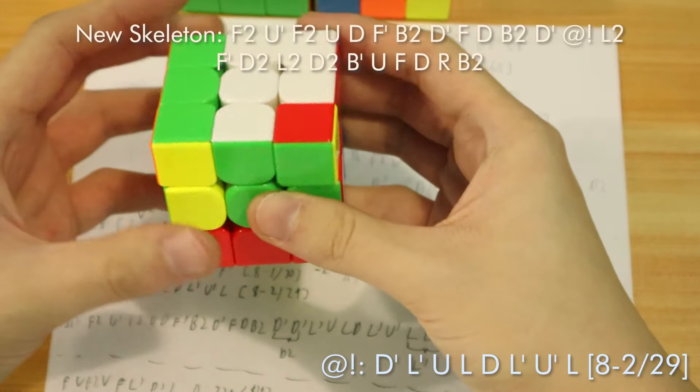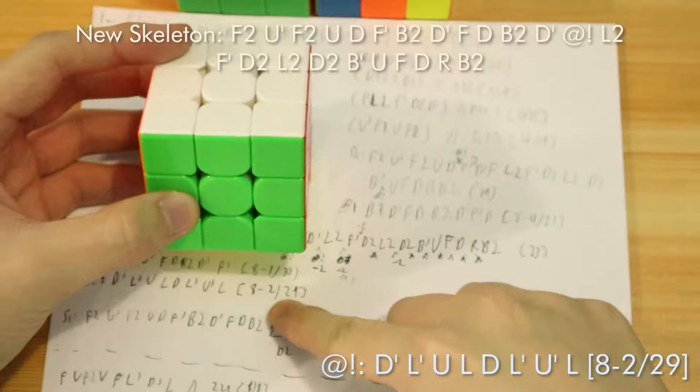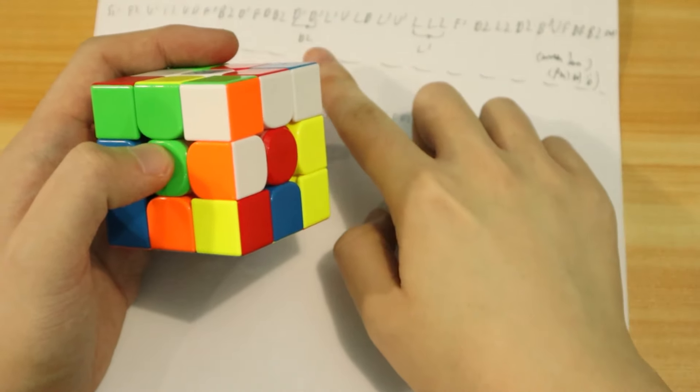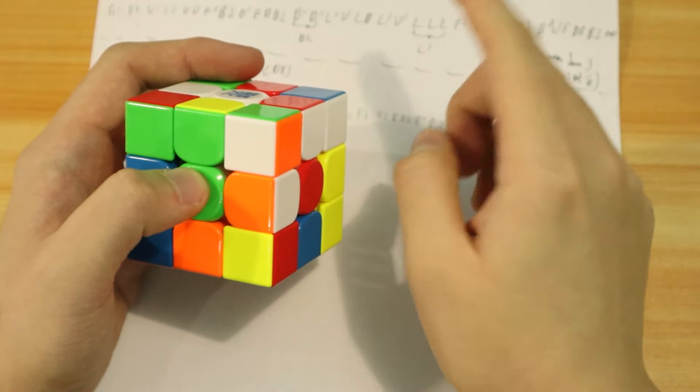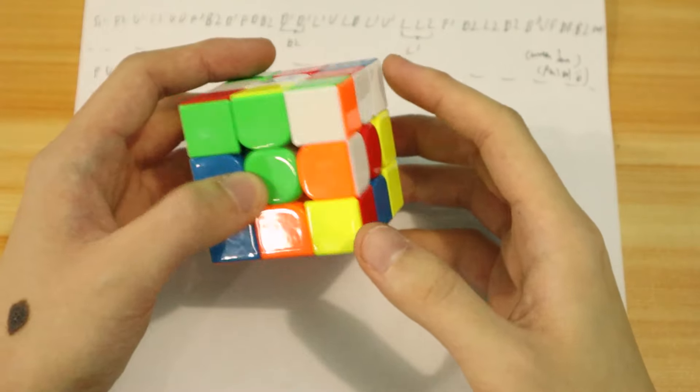And so here that leaves us with this easy CBO, which is D' L' U L D L' U L. And that actually cancels two moves. Now with that all said and done, cancelling those two moves only added six moves to the otherwise 23-moved skeleton, leaving us at an optimal 29 moves.